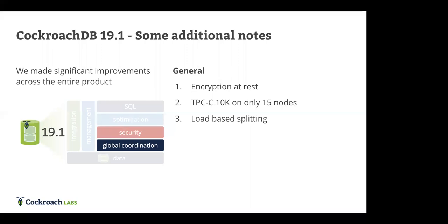Regarding a follow-up question about protecting data in motion: by default we use TLS 1.2 encryption for communication between CockroachDB nodes. In some databases encryption in flight is an enterprise feature — for us it's a standard out-of-the-box feature. The reason: we're building a distributed system where nodes communicate over the network, so we want to make sure that communication is always secure.